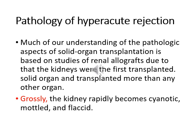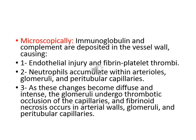In hyper-acute rejection, grossly the kidneys rapidly become cyanotic, mottled, and flaccid. Microscopically, immunoglobulin and complement are deposited in the vessel wall, and this leads first to endothelial injury and fibrinous thrombus formation.